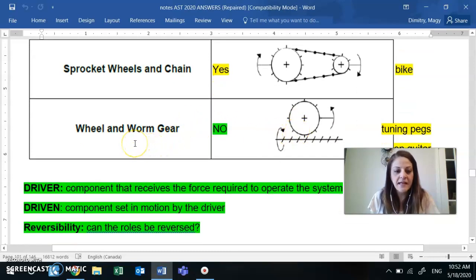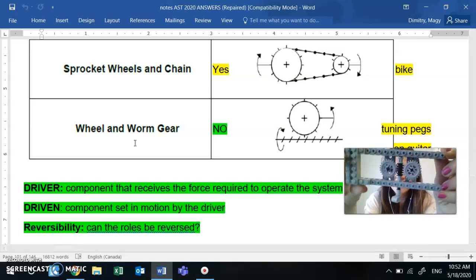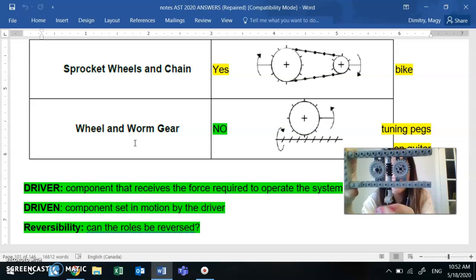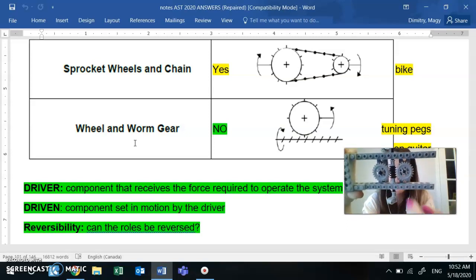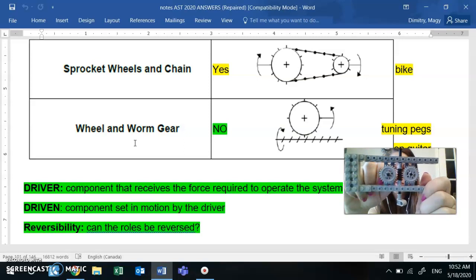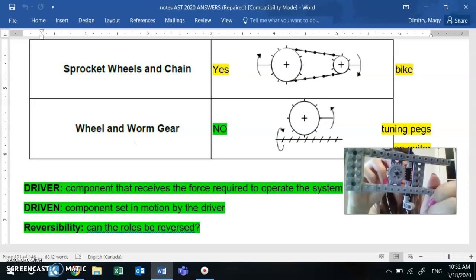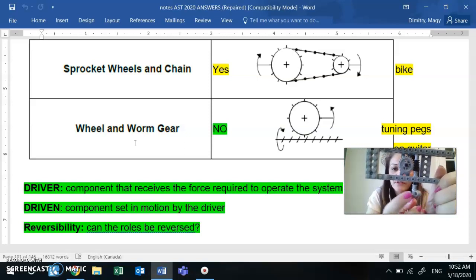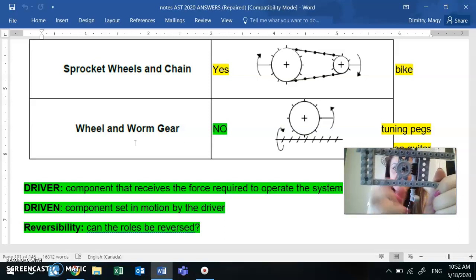And the last type of system is the wheel and worm gear. So right here, see that. So as I spin my worm, the worm is the component that's in the middle. As I turn my worm, the gears spin also. Just need to make sure they're really fitting in. And we lose one, it doesn't matter. You can still see the gear moving.